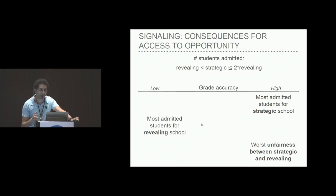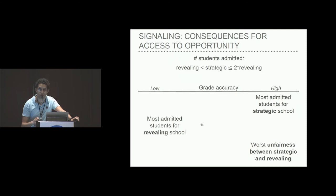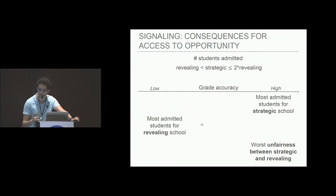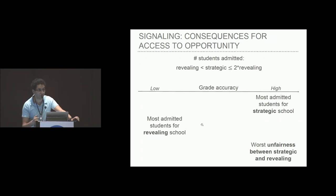Unsurprisingly, a school that is strategic in signaling is able to get more students admitted than the revealing school. We can show that the strategic school can get up to twice as many students admitted. There is quite a disparity in how schools can place their students at universities. Another interesting observation is that as the accuracy of the grading scheme increases — as grades become a better and less noisy reflection of student abilities — the strategic school does better and gets more students admitted. Perhaps surprisingly, the revealing school does worse and gets fewer students admitted. So as grading accuracy improves, the disparities due to signaling actually increase.